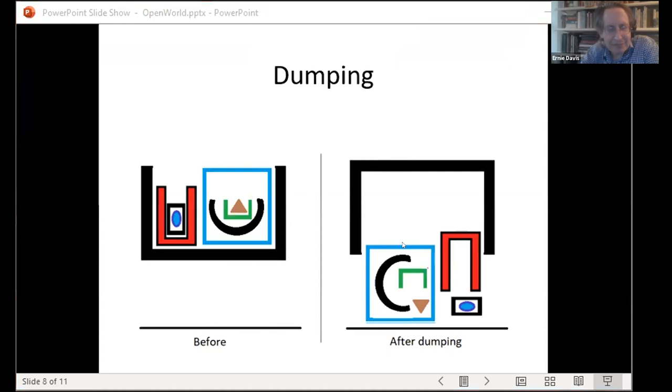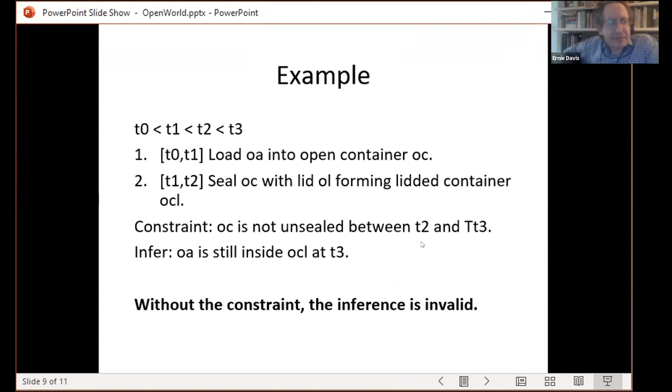The constraint that the container does not come unsealed between T2 and T3, but you say nothing else about what might have happened between T2 and T3. You may have put OC into some other container, you may have carried it around, you may have loaded something else into something else, and you want to be able to infer nonetheless that OA is still inside OC at time T5.